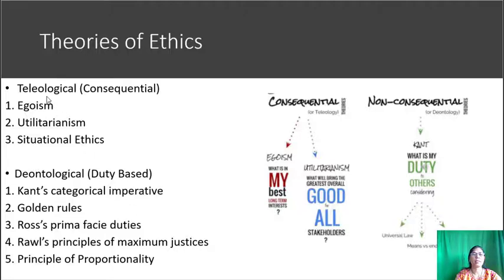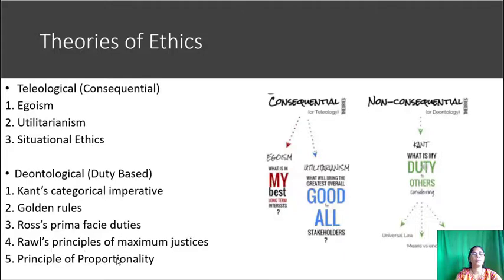Theories of Ethics. The first category is Teleological or Consequential Theories. Under this we have Egoism, Utilitarianism, and Situational Ethics. The second category is Deontological or Duty-Based Theories. Under this we have Kant's Categorical Imperative, Golden Rules, Ross's Prima Facie Duties, Rawls' Principles of Maximum Justice, and the Principle of Proportionality.